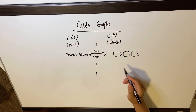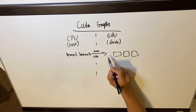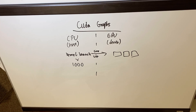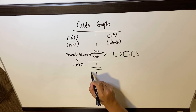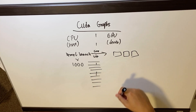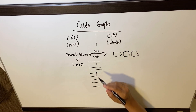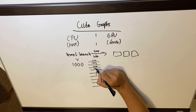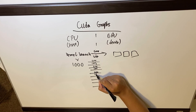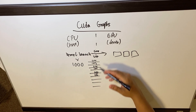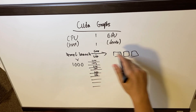The problem comes in when you don't have one kernel launch but you have a thousand kernel launches in your application. You're sending a thousand initialization overhead requests to get the GPU to process all of these — and every one of them represents a time cost. A significant portion of your application ends up just being communication between the CPU and GPU to launch all these kernels.